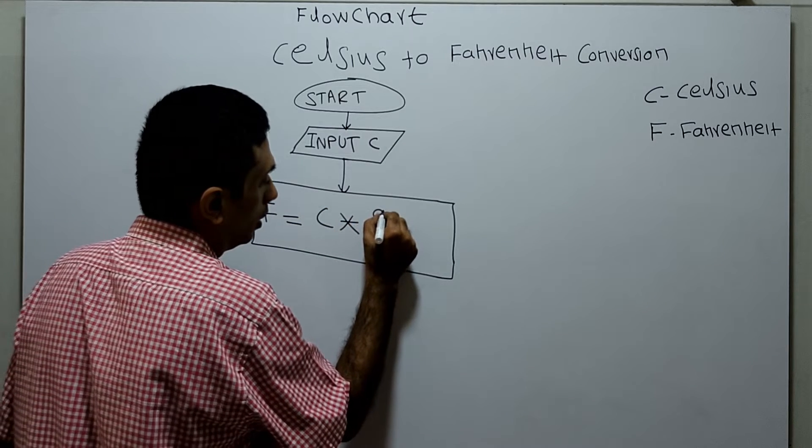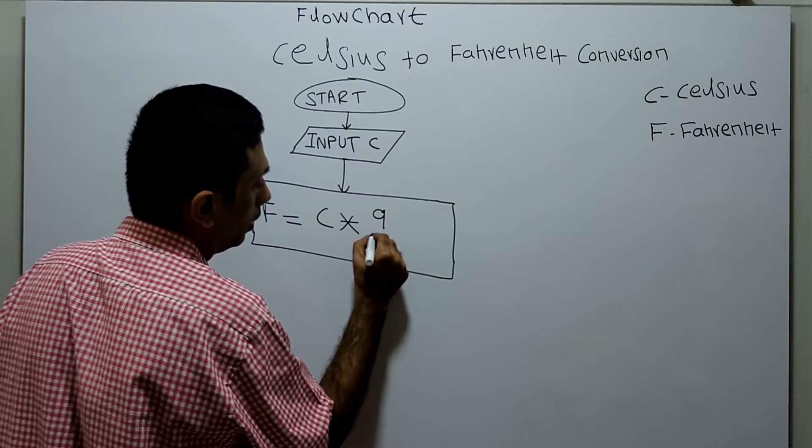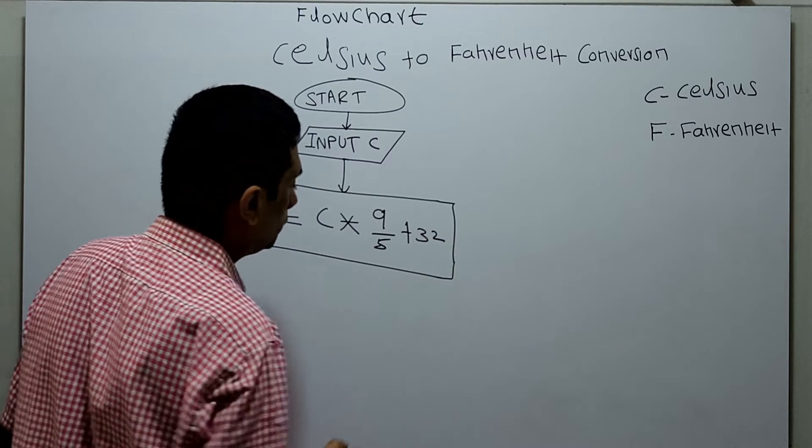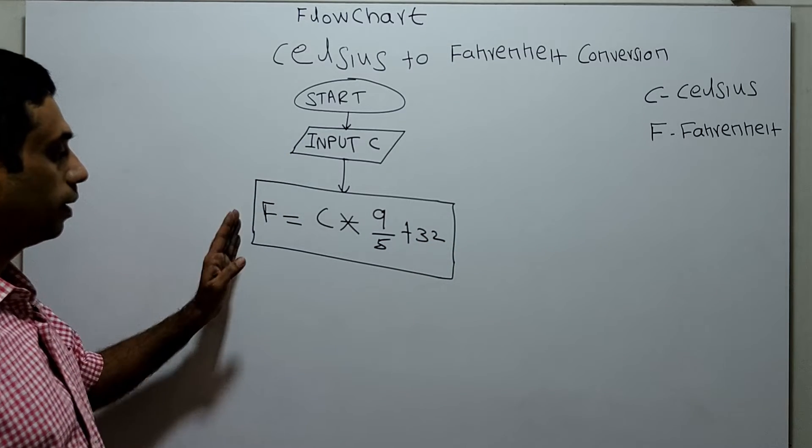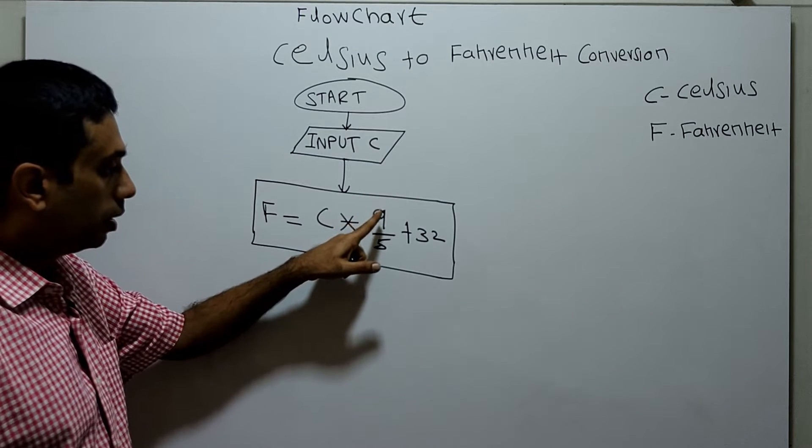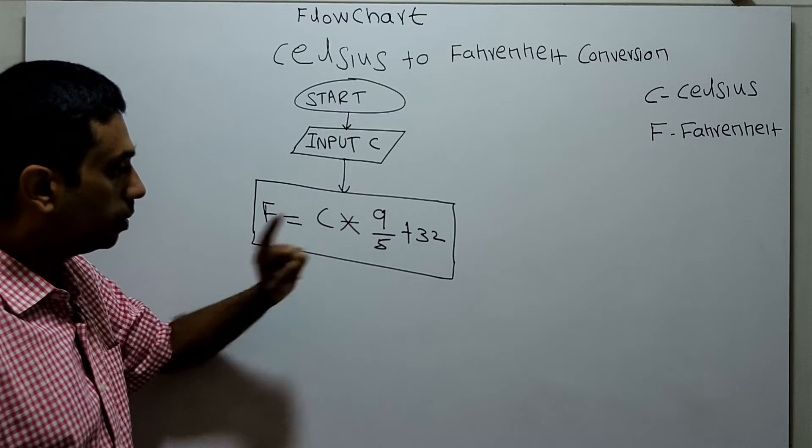This is the formula to calculate the Fahrenheit from the given Celsius value: Celsius into 9 divided by 5 plus 32.